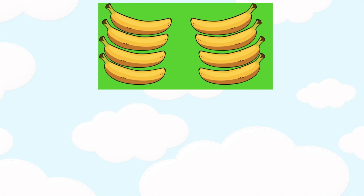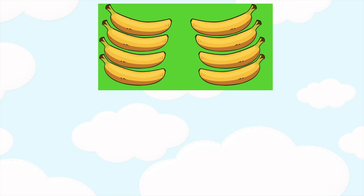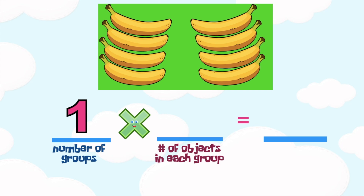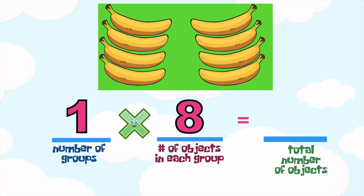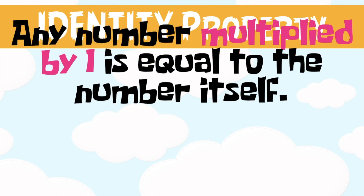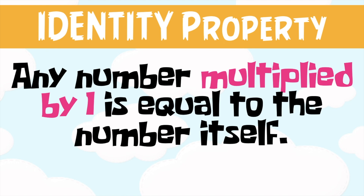Always remember: any number that you multiply by 1, the product is the number itself. Now with this illustration, we have 1 group with 8 bananas. So 1 times 8 is equal to 8. Again, this property is what we call the identity property of multiplication — any number multiplied by 1 is equal to the number itself.